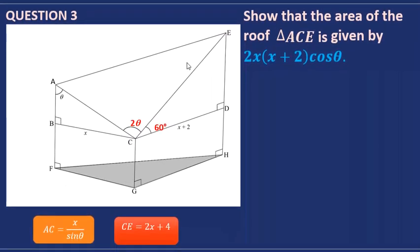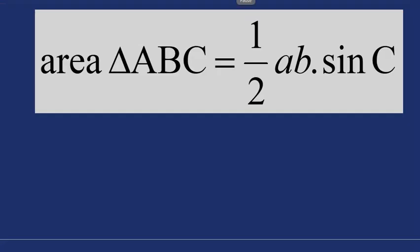In question three, we are asked to show that the area of triangle ACE can be written as 2x(x + 2) multiplied by cosine theta. To calculate area we use the area rule formula, which is on your formula sheet: Area = half times a times b times sine of C.